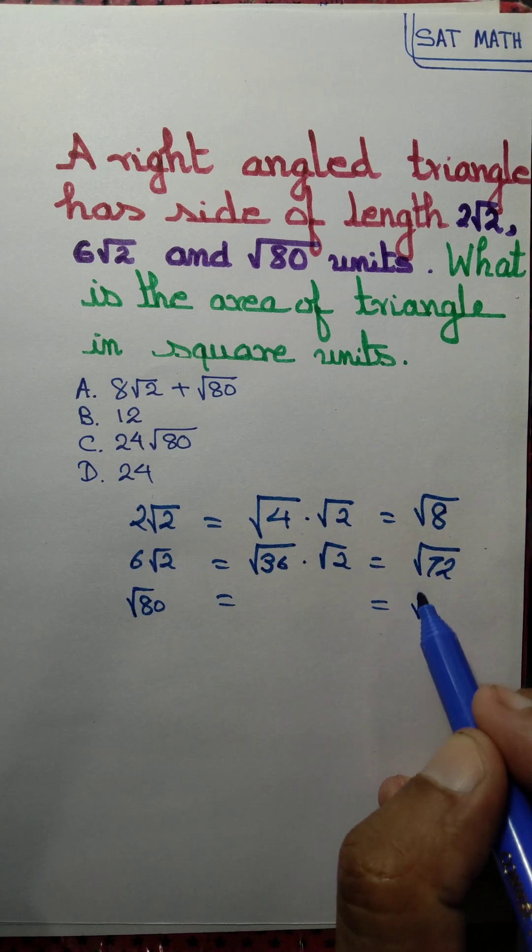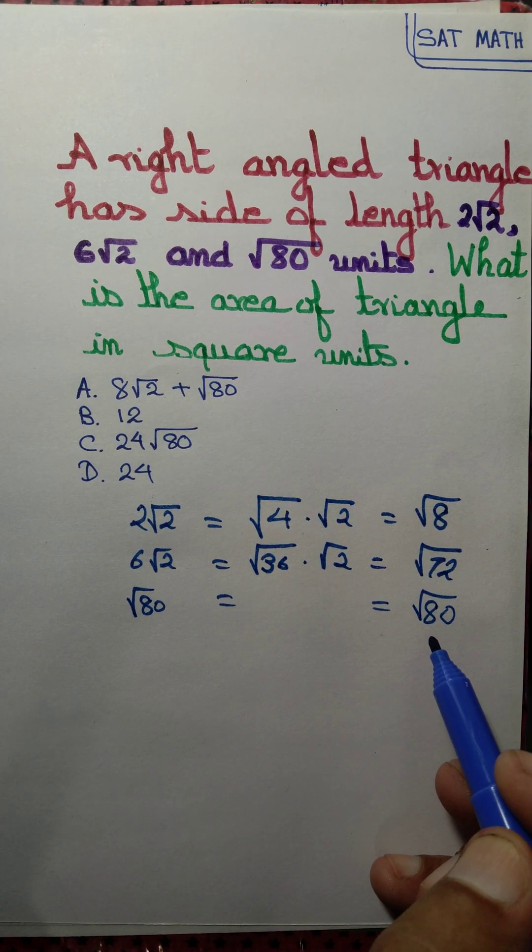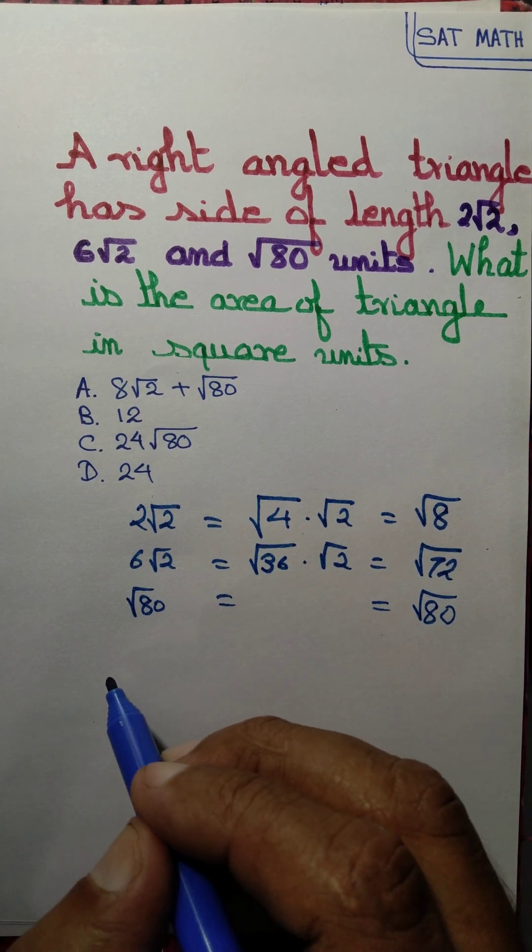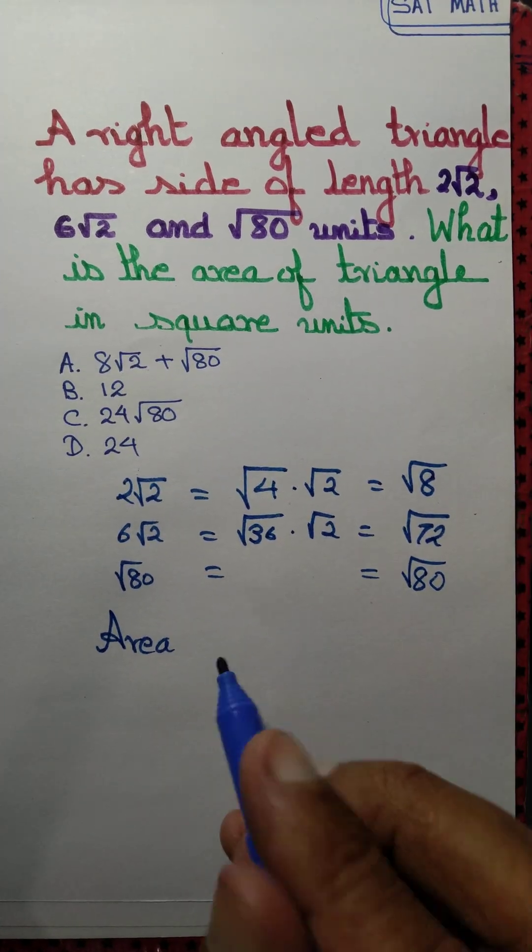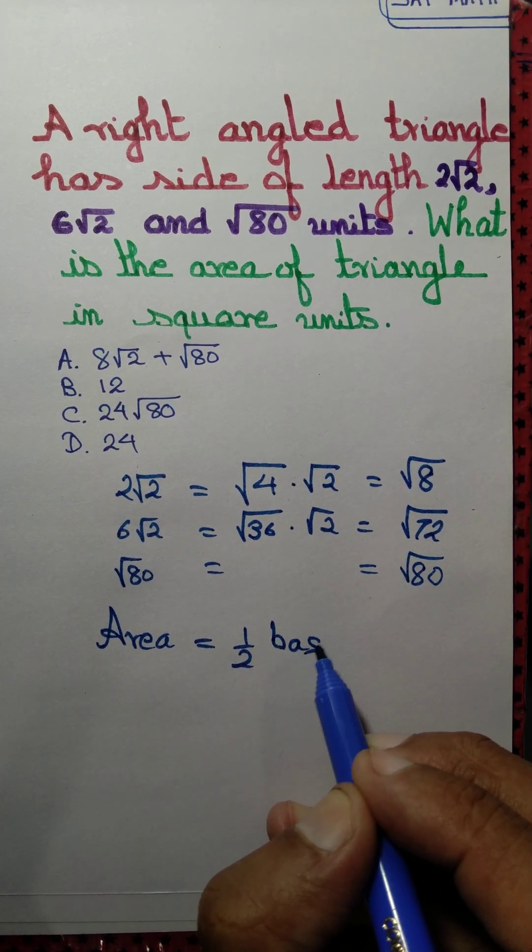We conclude that √80 must be the hypotenuse, must be the length of the hypotenuse. So area of triangle, area equals half base times altitude.